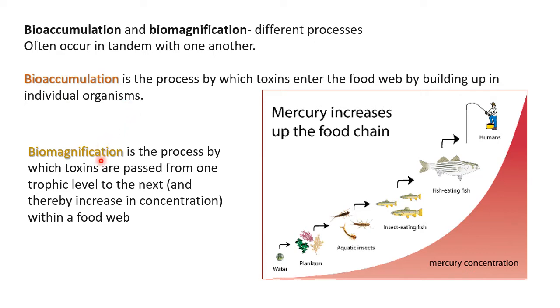Biomagnification is the process by which toxins are passed from one trophic level to the next, thereby increasing in concentration within a food web.